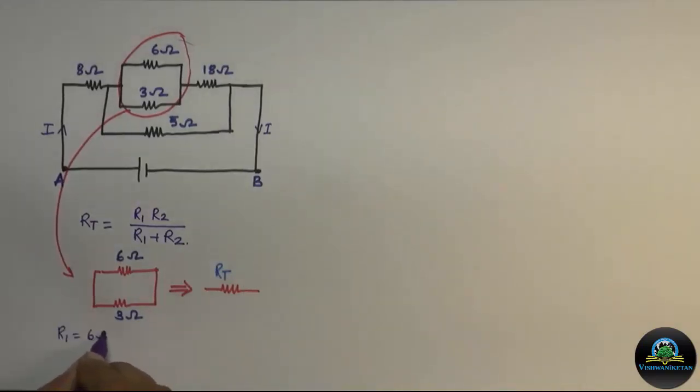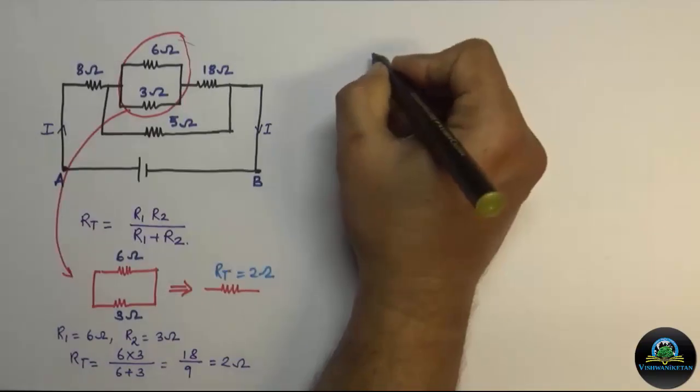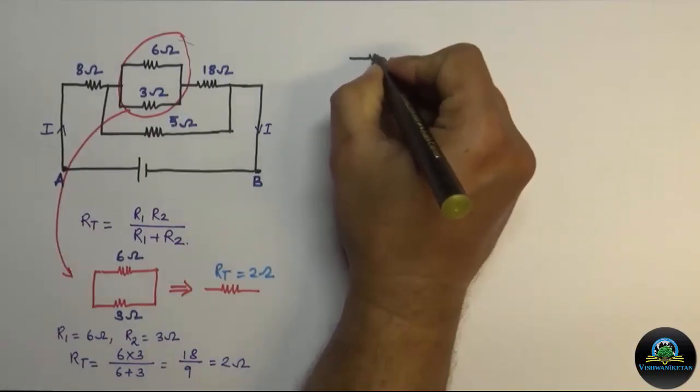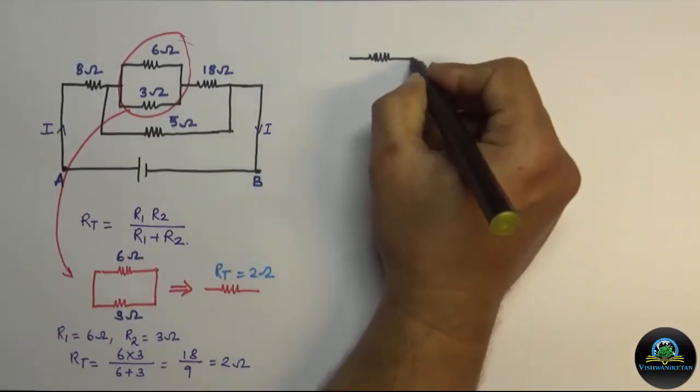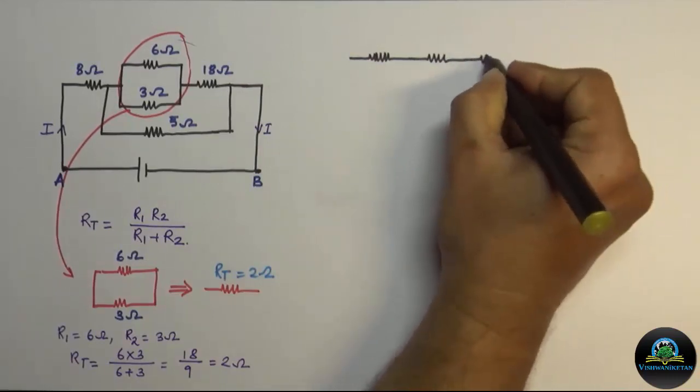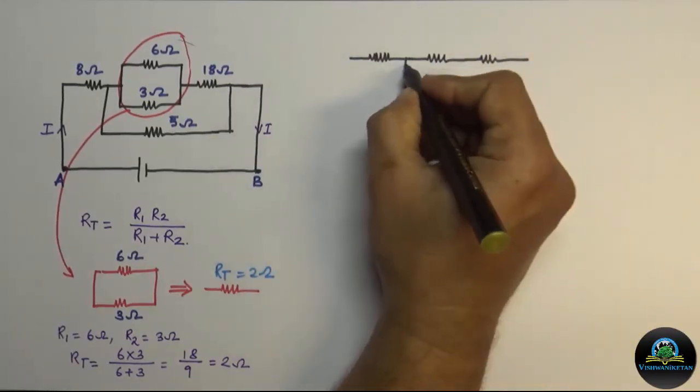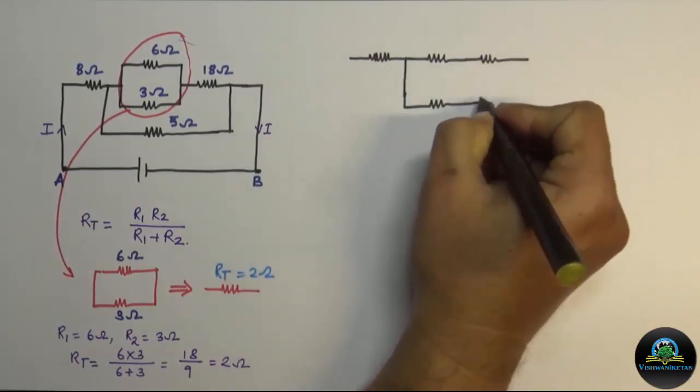Hence RT is 2 ohm. Now our circuit changes by modification of this step.